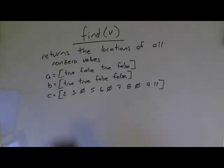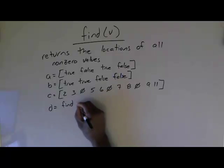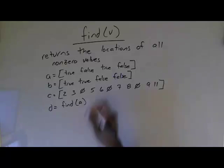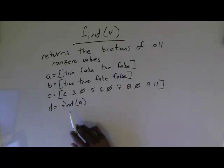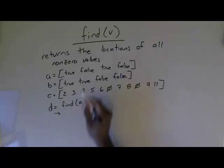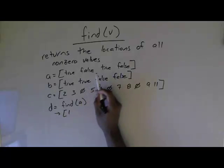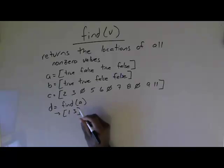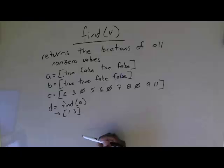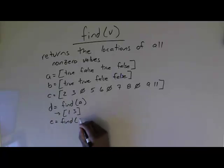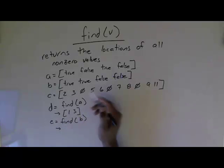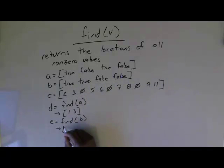Let's see how the find function works on these. If D equals find(A), the question is: where are the non-zero values located in A? That returns the indices — not the non-zero values themselves, but where they are located. So find(A) gives us the vector [1, 3], meaning D becomes [1, 3]. If we did E equals find(B), it gives us [1, 2], because those are the indices of the non-zero values. Keep in mind, true is 1 and false is 0.